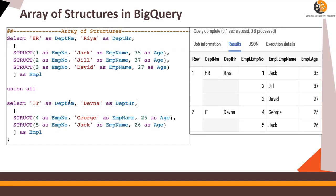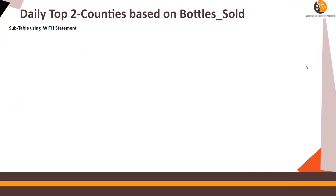It's getting a little complicated, so make sure you pause the video and spend a few minutes on this slide. You have department HR — Ria has department HR, you have IT, and Devna as department HR. Within those departments, remember the department table has a subtable of employees with employee number, employee name, and employee age.